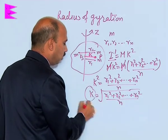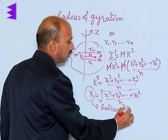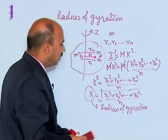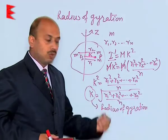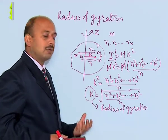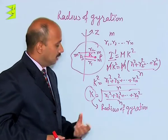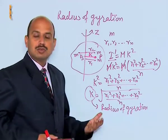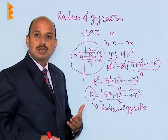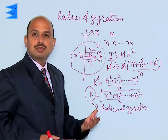This k is known as the radius of gyration. The radius of gyration k is also equal to the root mean square value of all the perpendicular distances of the particles from the axis of rotation. This radius of gyration depends on the shape and size of the body, the distribution of the masses, and the orientation of the axis of rotation.